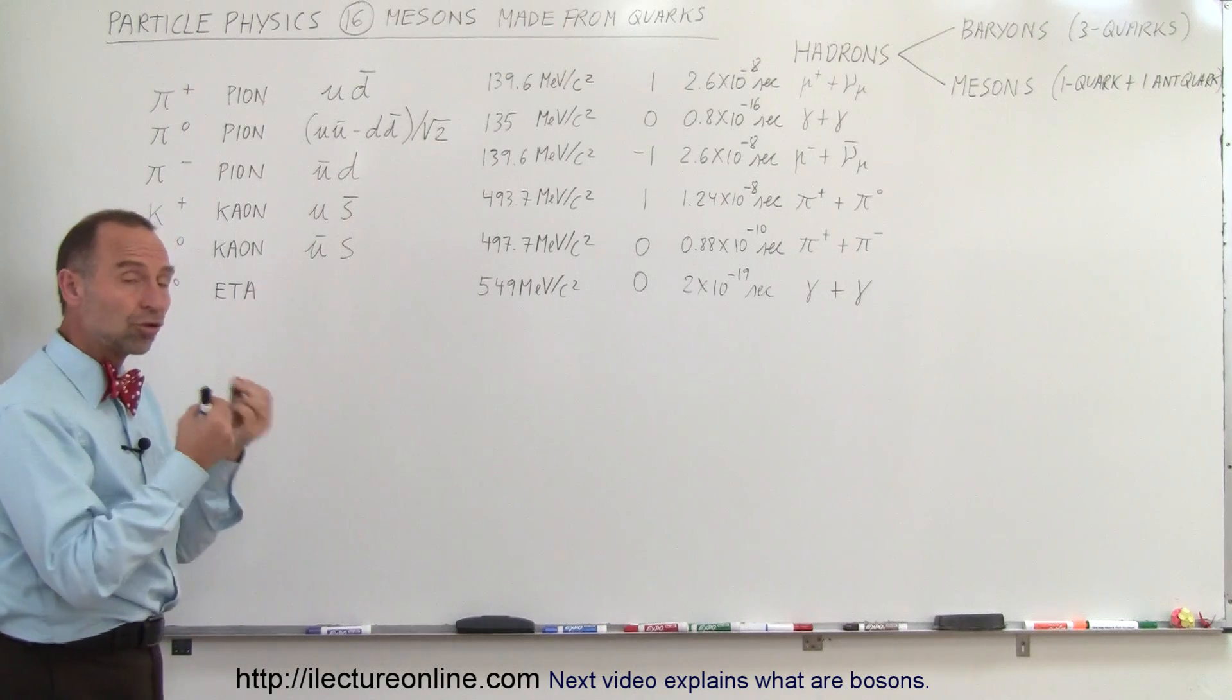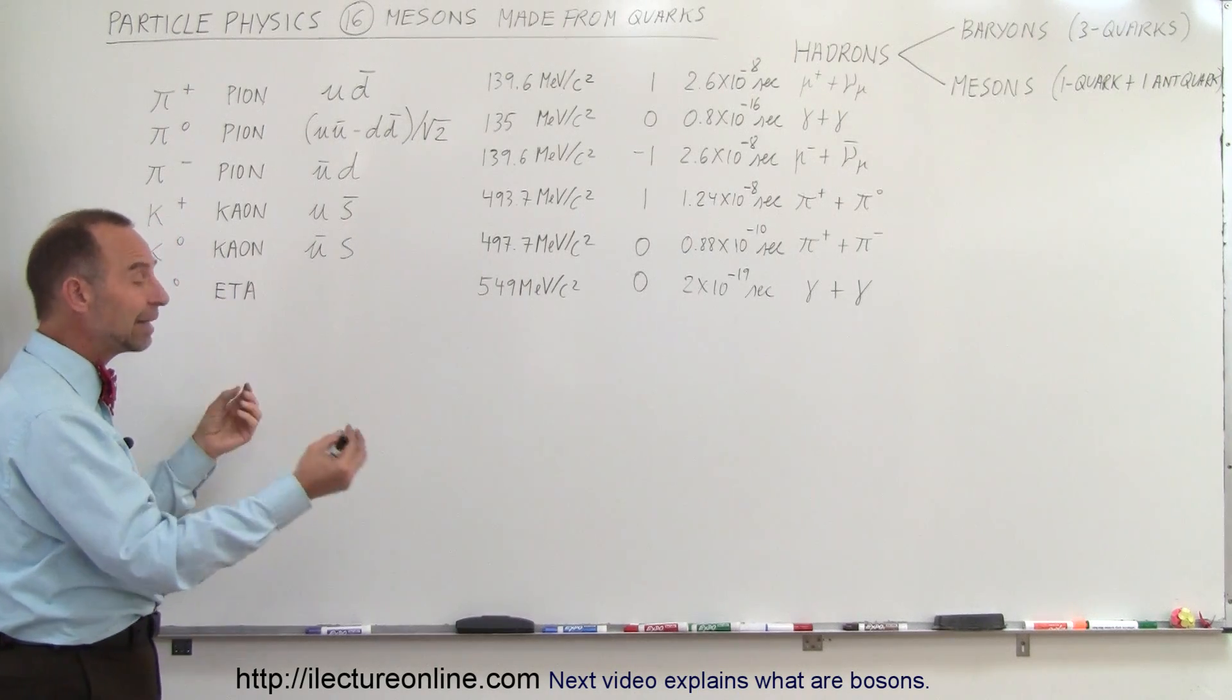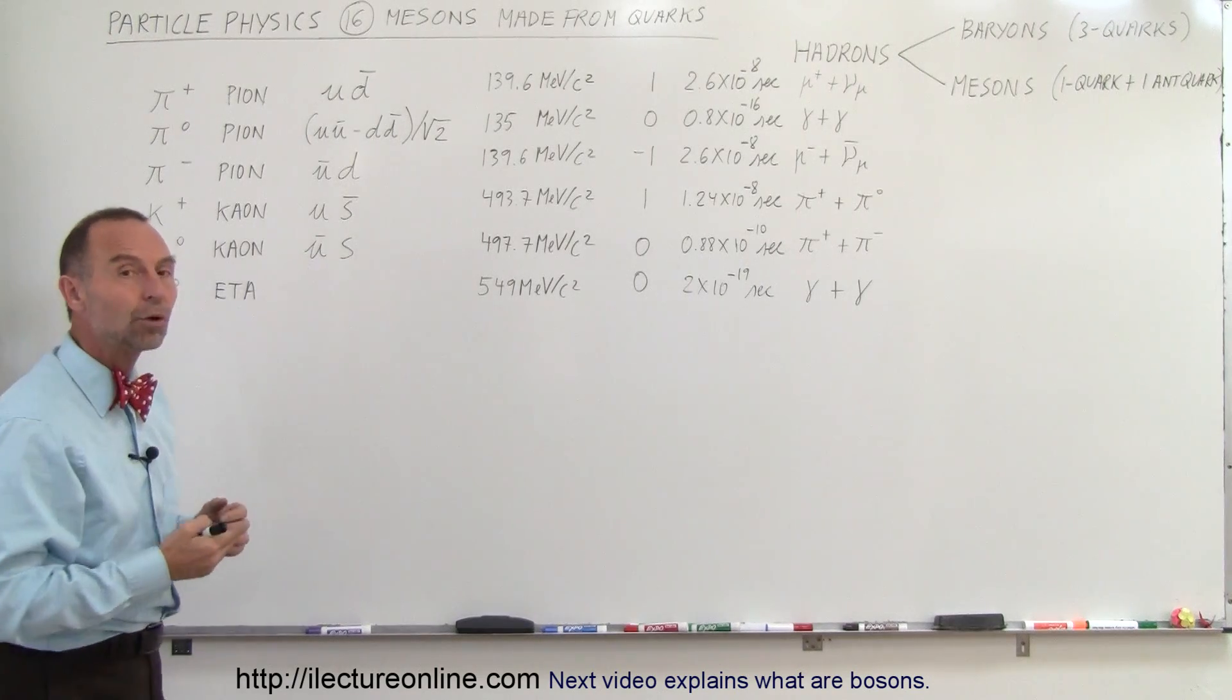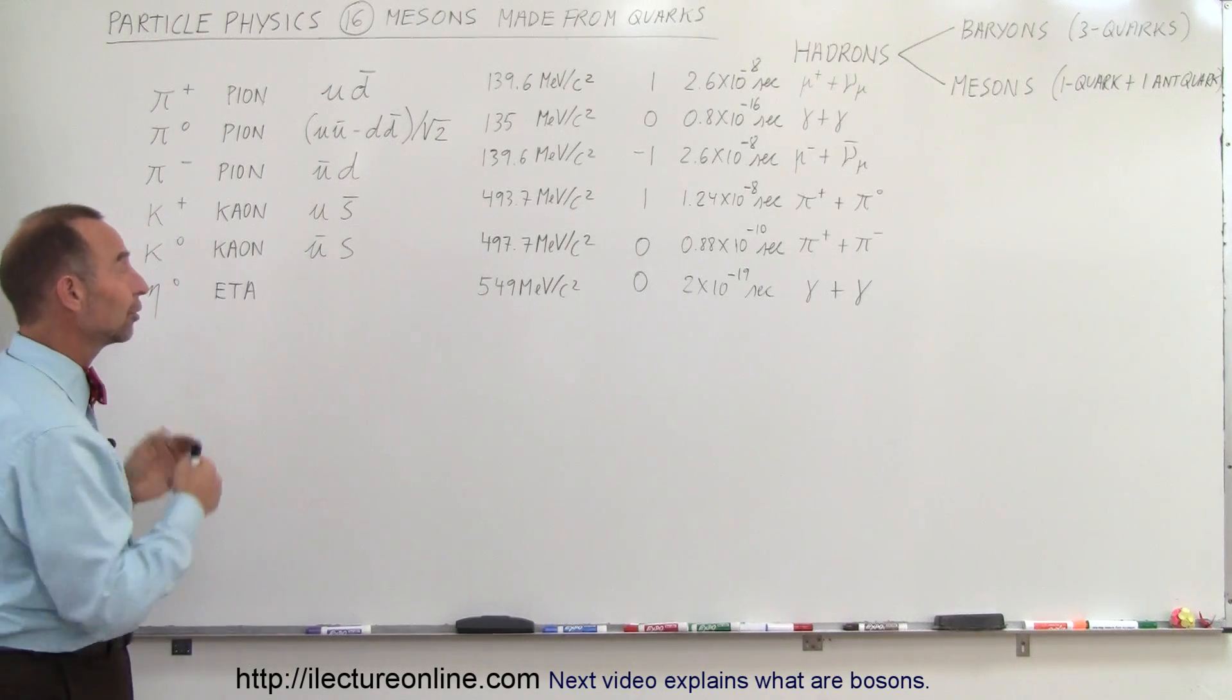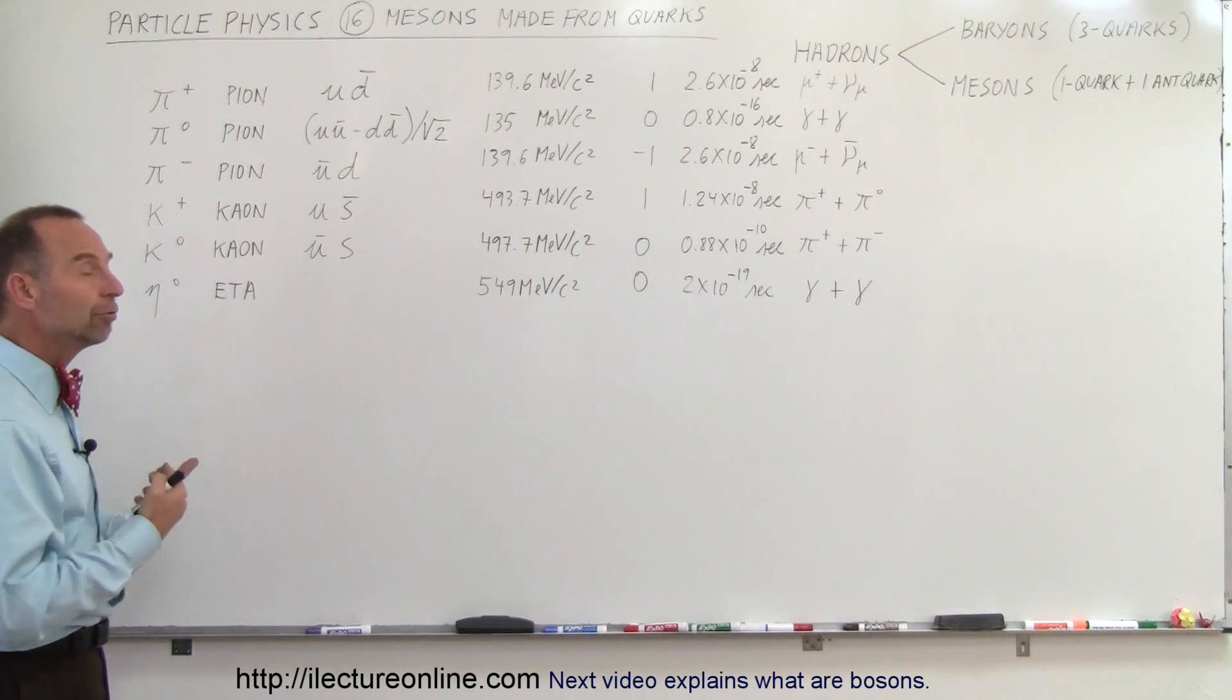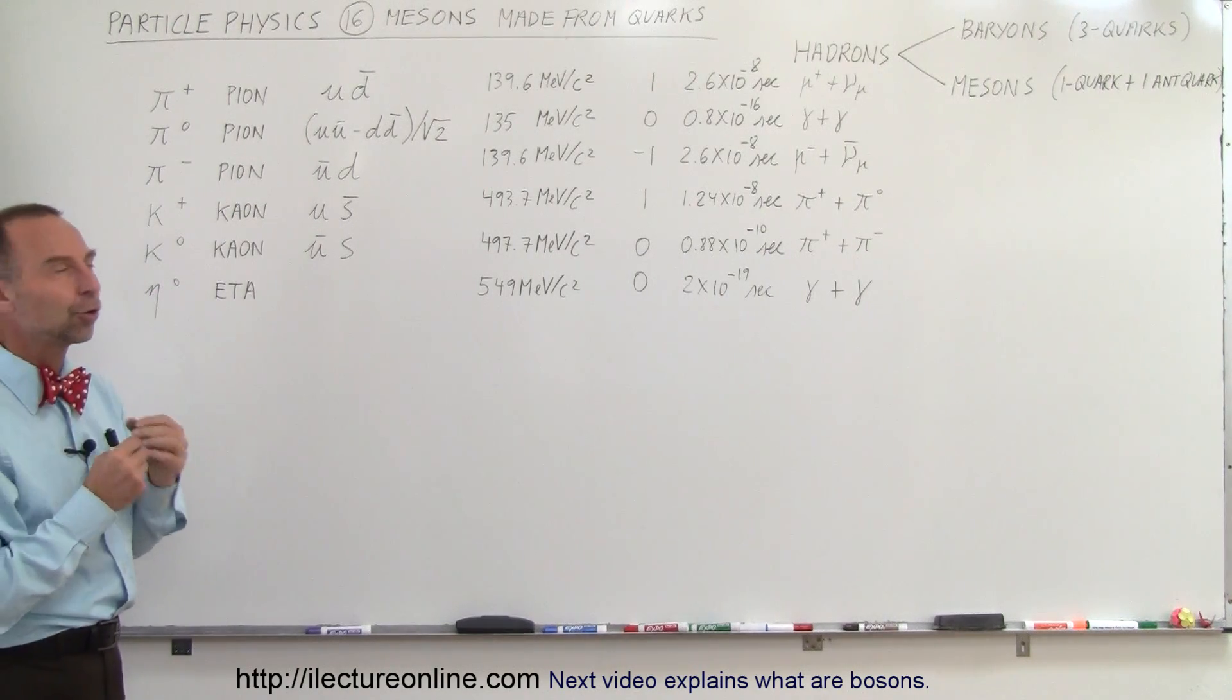And again, it is the structure, the internal structure, caused by the formation of the union of a quark and an anti-quark. And again, there's many more of these mesons than the ones that I have here on the board, made up of different kinds of combinations, and again, all of them are unstable. They only last for a very short period of time.